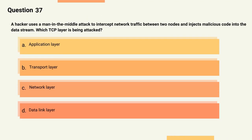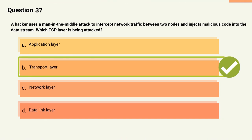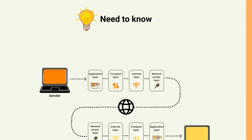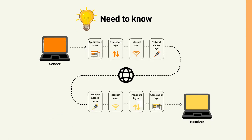Question 37: A hacker uses a man-in-the-middle attack to intercept network traffic between two nodes and injects malicious code into the data stream. Which TCP/IP layer is being attacked? Options: A) Application layer, B) Transport layer, C) Network layer, D) Data link layer. The correct answer is Option B, Transport layer. Explanation: The transport layer is responsible for providing reliable data transfer services to the upper layers. The hacker intercepting network traffic and injecting malicious code is an attack on the transport layer.